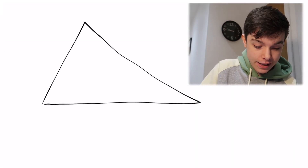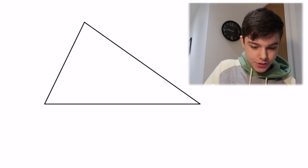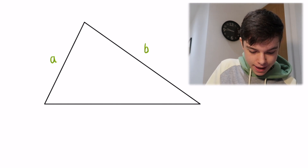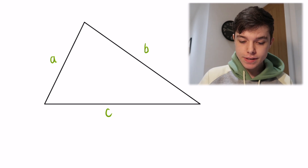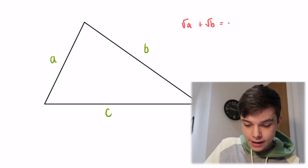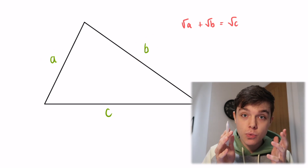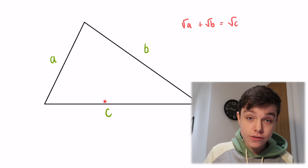Clearly the theorem is wrong, but Homer stated it just for isosceles triangles. We've proved it doesn't work for isosceles triangles — let's also check any triangle. A general triangle has three different sides, which we'll label A, B, and C. Homer's theorem for this case says: the square root of A plus the square root of B equals the square root of C.